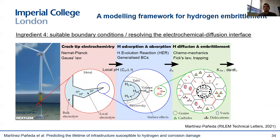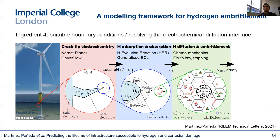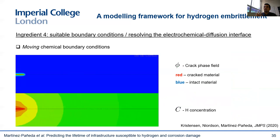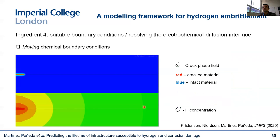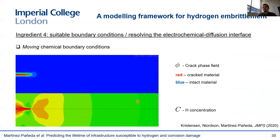There is one last ingredient I want to mention: the boundary conditions. We have been working on resolving the electrochemical diffusion interface to properly quantify how much hydrogen is entering the sample. And we have developed suitable boundary conditions to capture how the environment follows the crack as it propagates. If you have a crack propagating in a wind turbine monopile, you would expect the seawater to immediately occupy the space created by the new crack surface. This can be achieved very easily using a penalty approach — you can see the phase field crack here, and the concentration from the environment that nicely follows the crack growth.